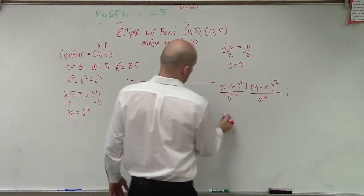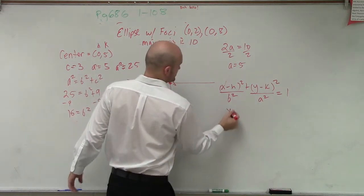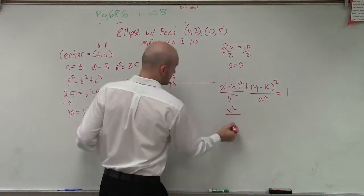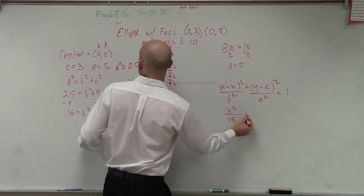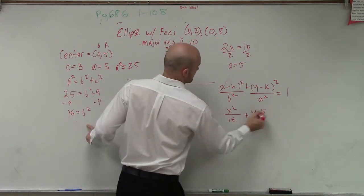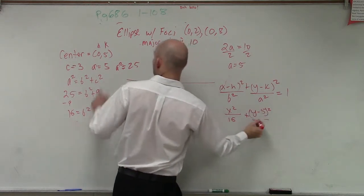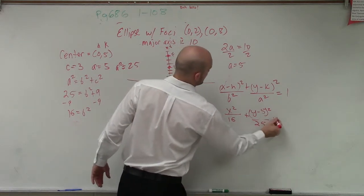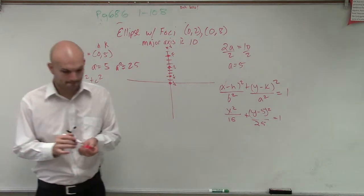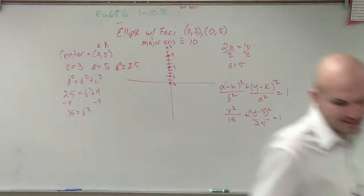So let's write the equation. x minus 0, so it's just going to be x squared over b squared, which is 16, plus y minus 5 squared over a squared, which is 25, equals 1. That's it.